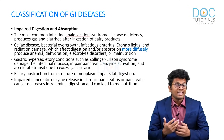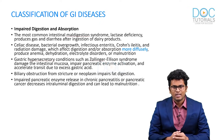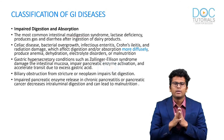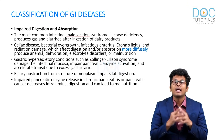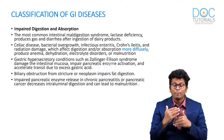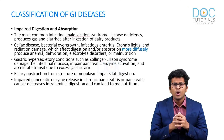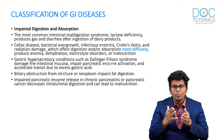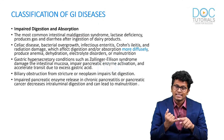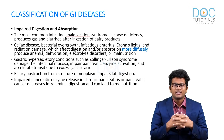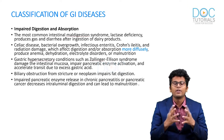Now let's discuss the classification of GI diseases. The first mechanism is impaired digestion and absorption. The most common intestinal maldigestion syndrome — if asked in an MCQ — is lactase deficiency, which presents as excessive gas and diarrhea due to indigestion of dietary products. Disorders with more diffuse involvement, like celiac disease, bacterial overgrowth, infectious enteritis, Crohn's disease, and radiation damage, cause diffuse problems presenting with anemia, dehydration, electrolyte disorders, and malnutrition.